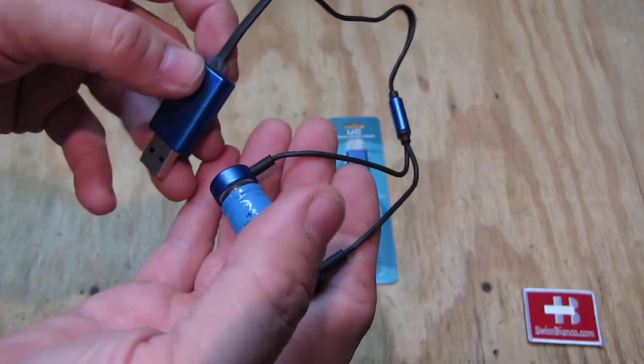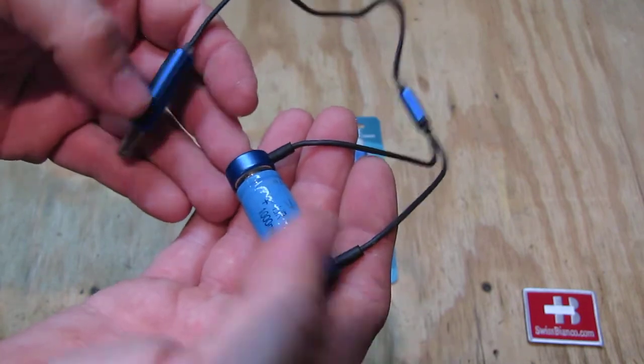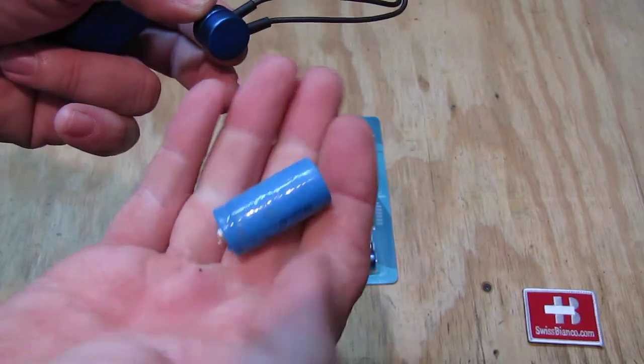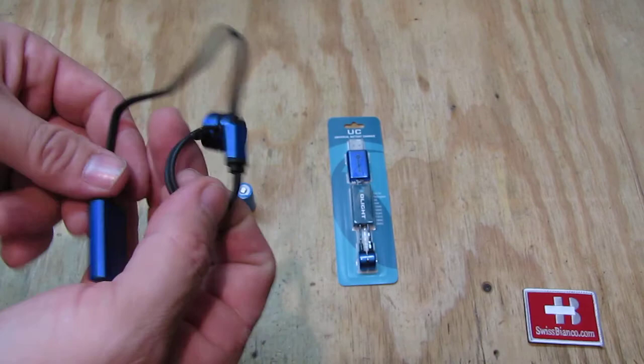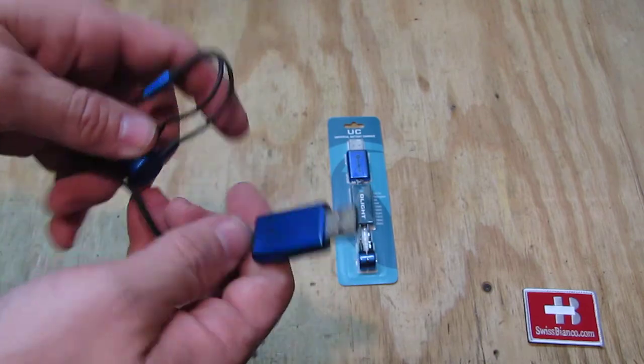As the green light shows up, the battery is charged. Then you simply take the rechargeable battery out and you can store and put away the cable.